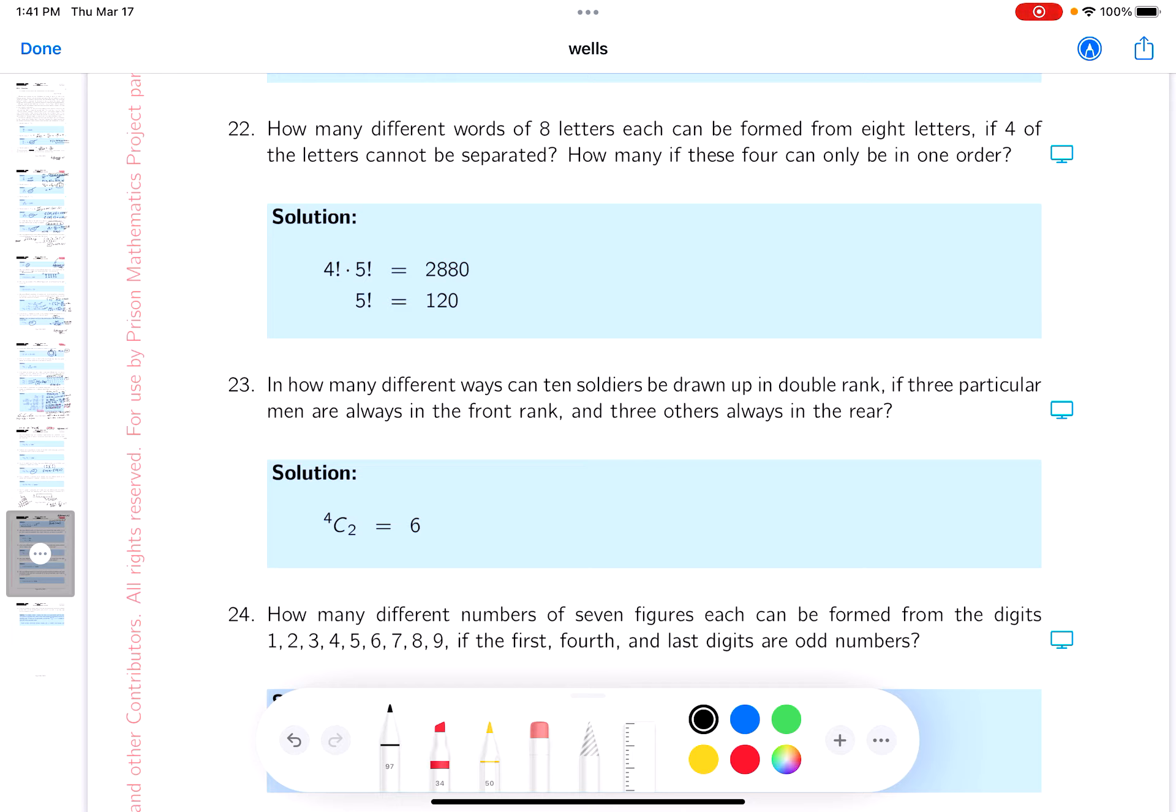Four of the letters cannot be separated. So what I'm going to say, if four of the letters can't be separated, there's four factorial ways to arrange that, just that alone. And then you'd start thinking about it as this is just one group of four letters.